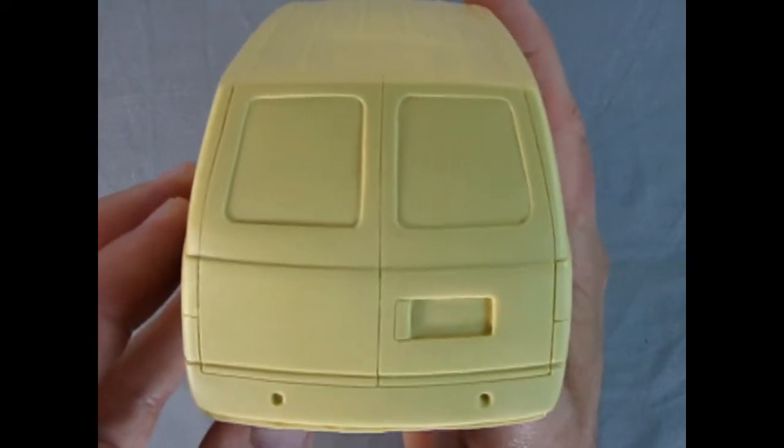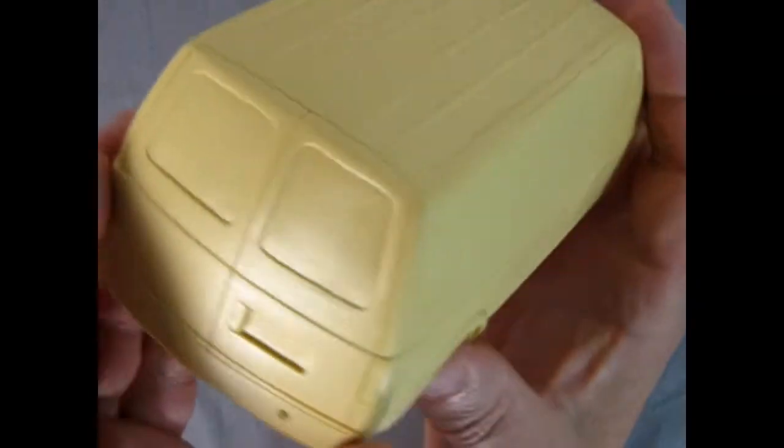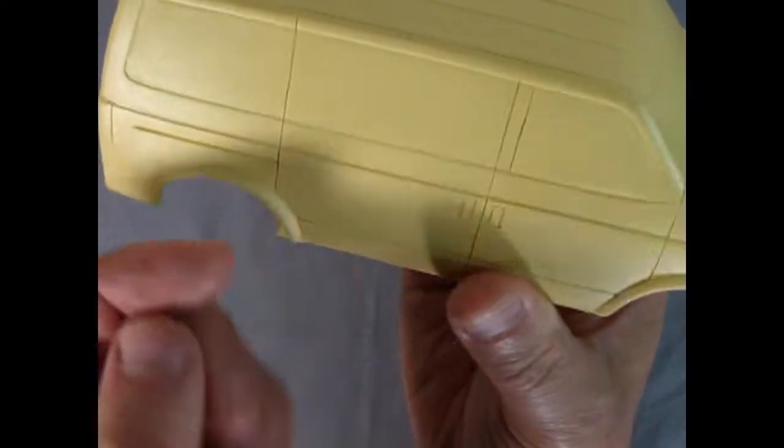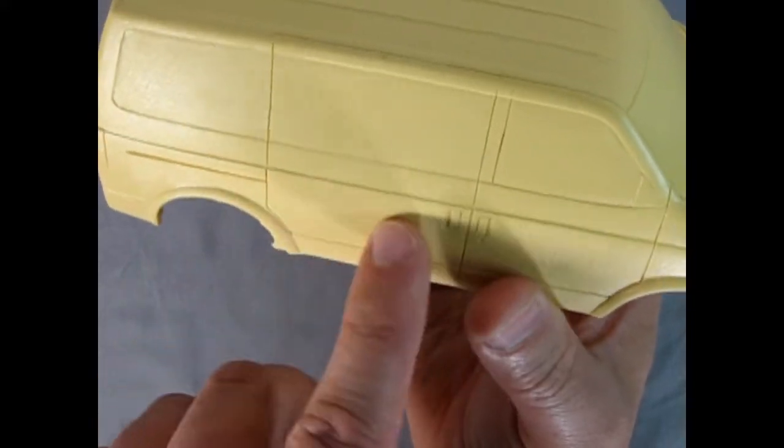Look at the back end, looks really nice. It's even got the sunken in area for the license plate. Jimmy really did well on making this look just like the proper Astro van. Even has the sliding door in here.